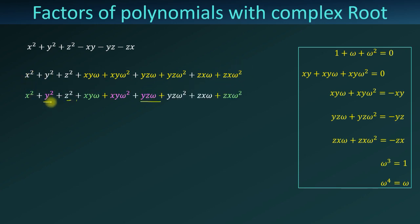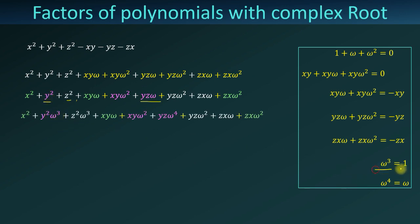In this expression, we can replace y squared by y squared times omega cubed, because omega cubed equals 1. And z squared can be replaced by z squared times omega cubed. And yz·omega can be replaced by yz times omega to the fourth power, because omega to the fourth power is equal to omega.